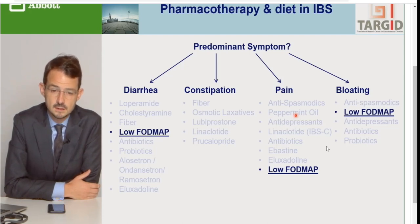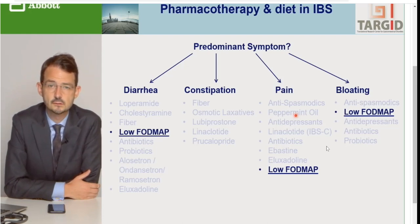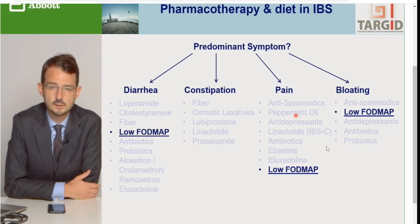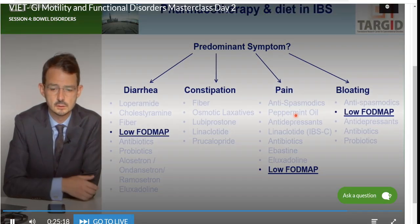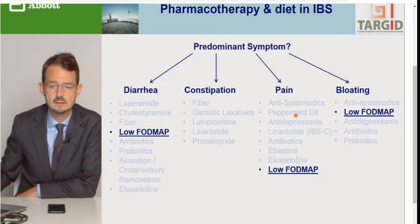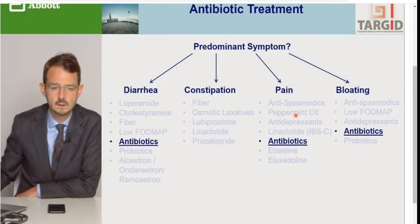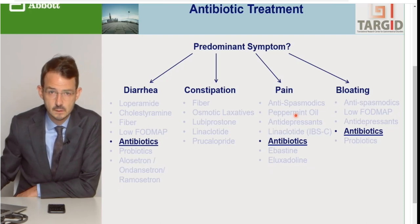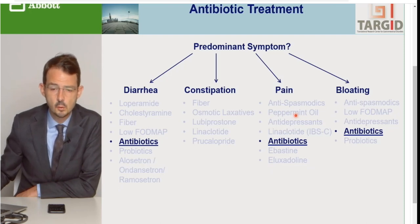Chất xơ có thể có lợi đối với những bệnh nhân chủ yếu là bị táo bón. Tuy nhiên, có nhiều bệnh nhân ăn nhiều chất xơ quá, cho nên chính cái chất xơ đó nó duy trì một số triệu chứng thí dụ như xì hơi trung tiện quá nhiều, hoặc là chướng bụng, hoặc là đau bụng. Chế độ ăn FODMAP cũng được xem là một cái điều trị hiệu quả đối với bệnh nhân bị IBS và có thể giải quyết những bệnh nhân chủ yếu bị tiêu chảy - đồng nghiệp của tôi sẽ nói kỹ hơn về chế độ ăn FODMAP trong các bài báo cáo kế tiếp.